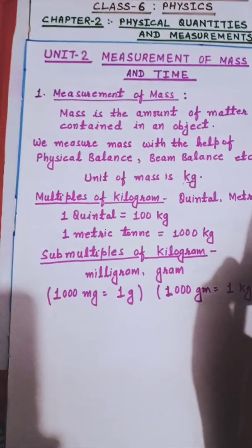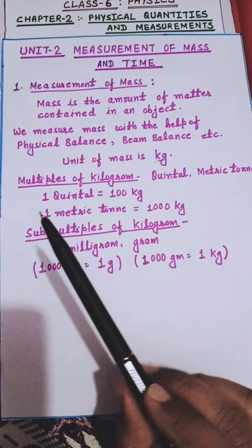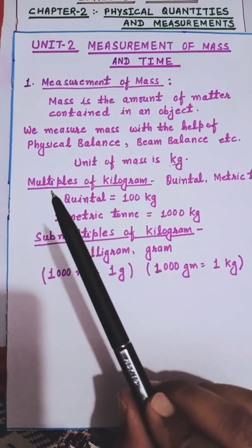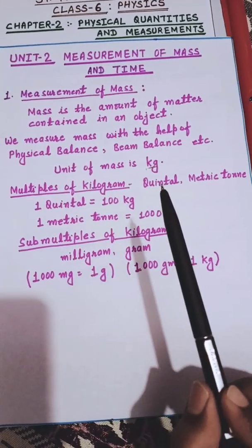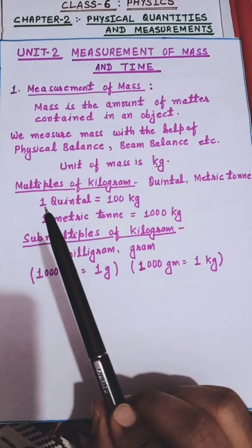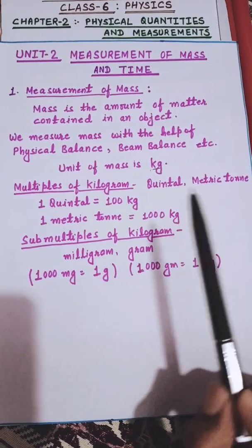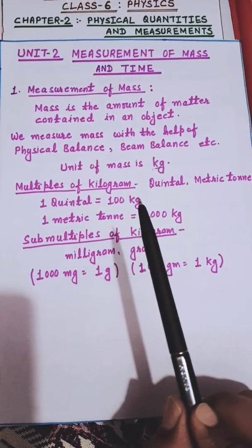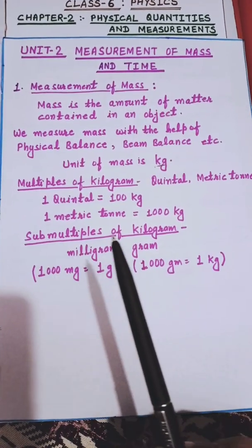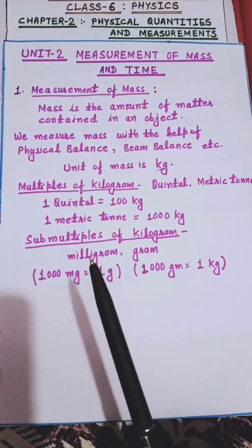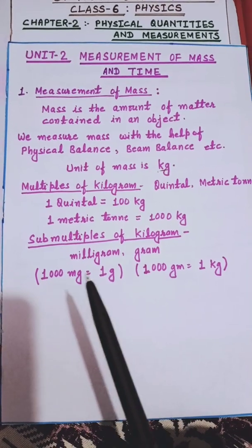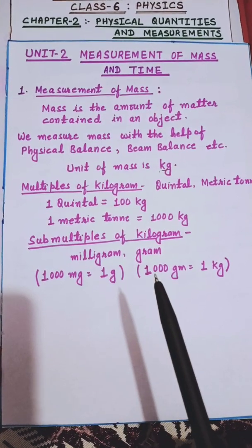Next, what are the sub-multiples and multiples of kilogram? The multiples of kilogram are quintal and metric ton. One quintal is equal to 100 kg, and one metric ton is equal to 1000 kg. The sub-multiples of kilogram are milligram and gram: 1000 milligrams is equal to 1 gram, and 1000 grams is equal to 1 kg.